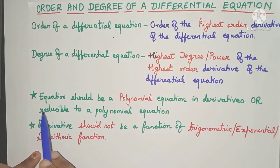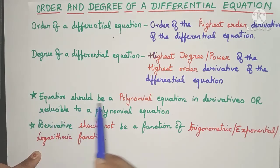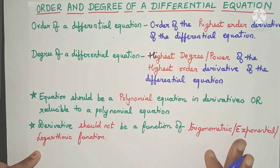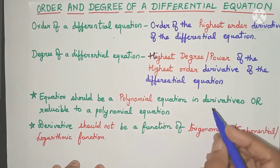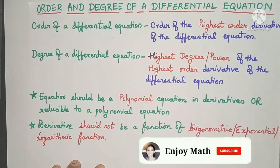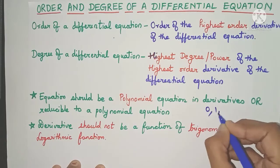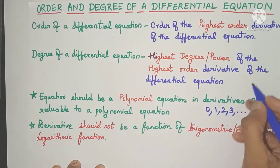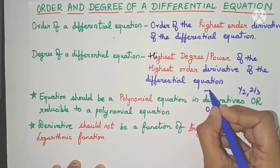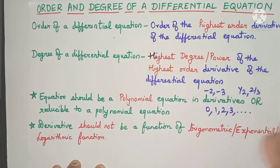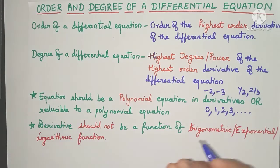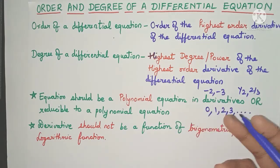There are a few important conditions to check. The differential equation must be a polynomial equation in derivatives, or reducible to one. A polynomial equation is one where the powers or exponents are whole numbers like 0, 1, 2, 3. If you have fractional powers like 1/2 or 2/3, or negative powers like -2 or -3, the equation is not a polynomial, and we need to reduce it first before finding the degree.